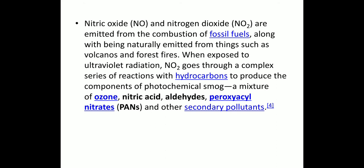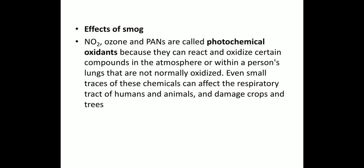The components of photochemical smog include a mixture of ozone, nitric acid, aldehyde, peroxyacyl nitrates (PAN), and other secondary pollutants. NO2, ozone, and PAN are called photochemical oxidants — they are the main pollutants because they can react and oxidize certain compounds in the atmosphere or within a person's lungs. Even traces of these chemicals can affect the respiratory tracts of humans. They can also damage crops and trees.